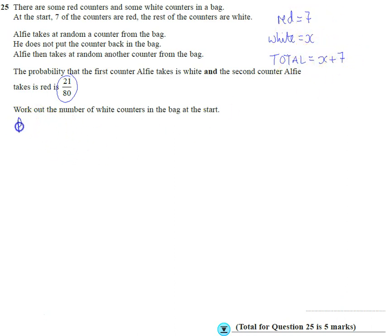Now we want to work out the probability of white then red. So the probability of picking a white counter first is X out of X plus 7. We're going to multiply that by picking a red counter second, so there's seven red.